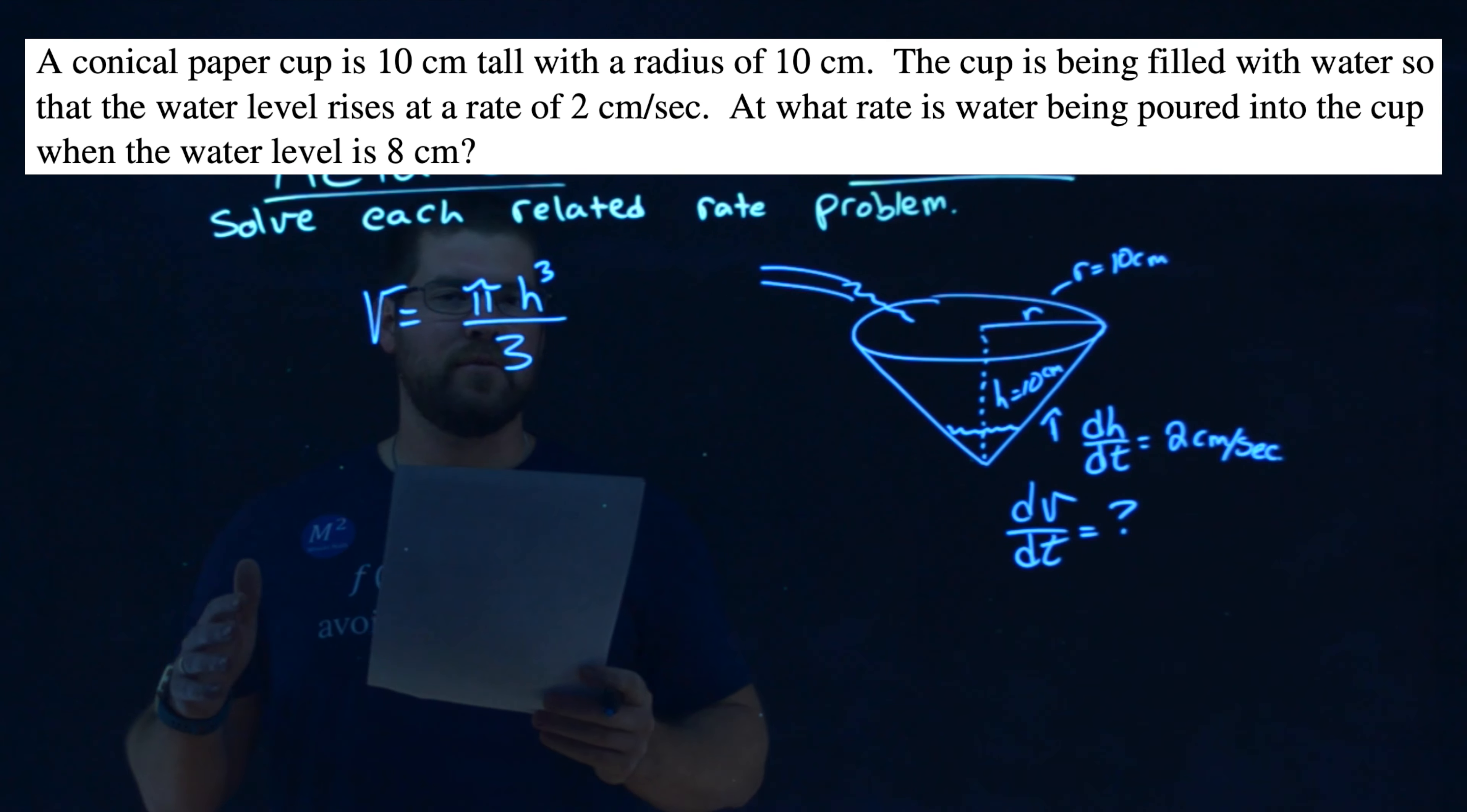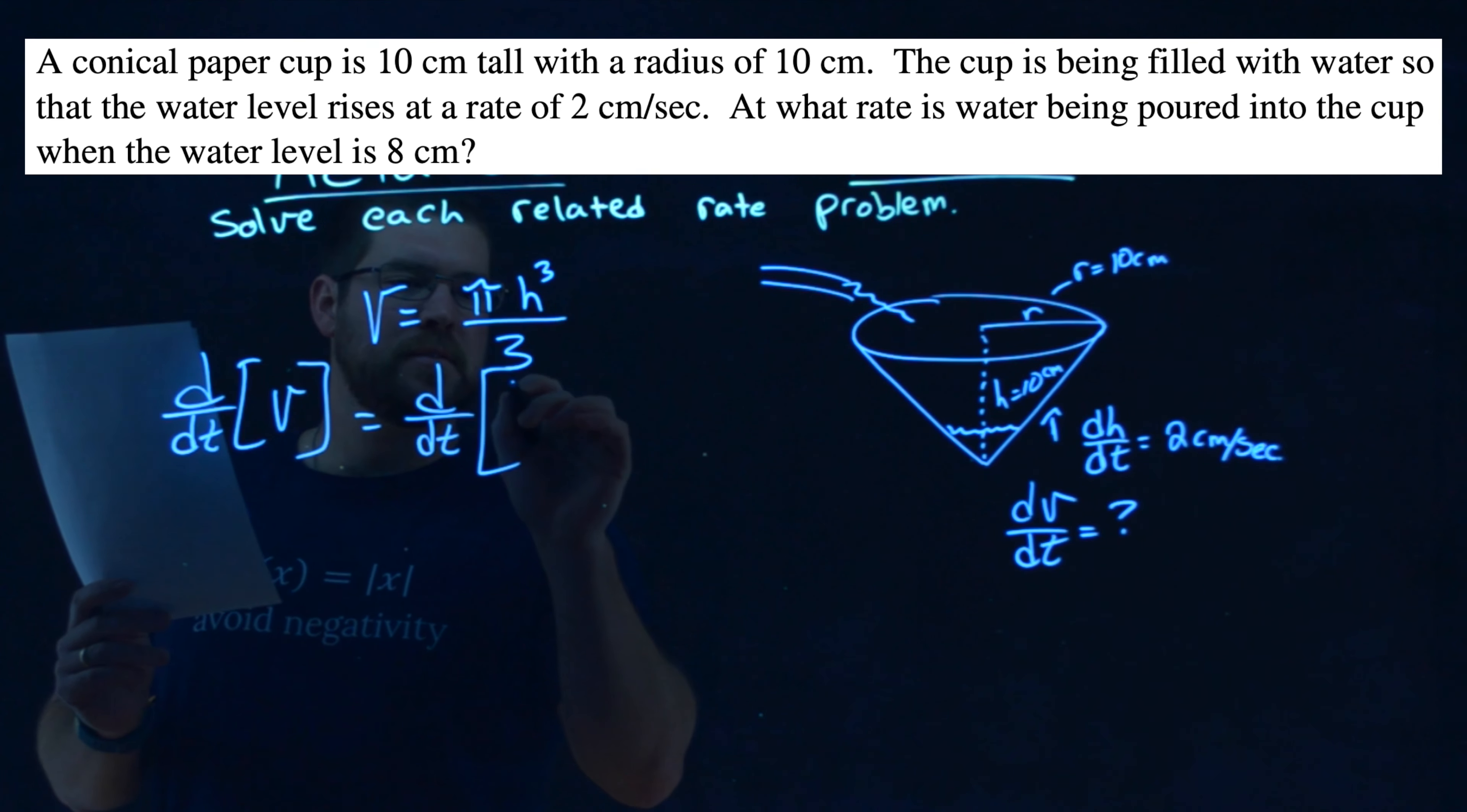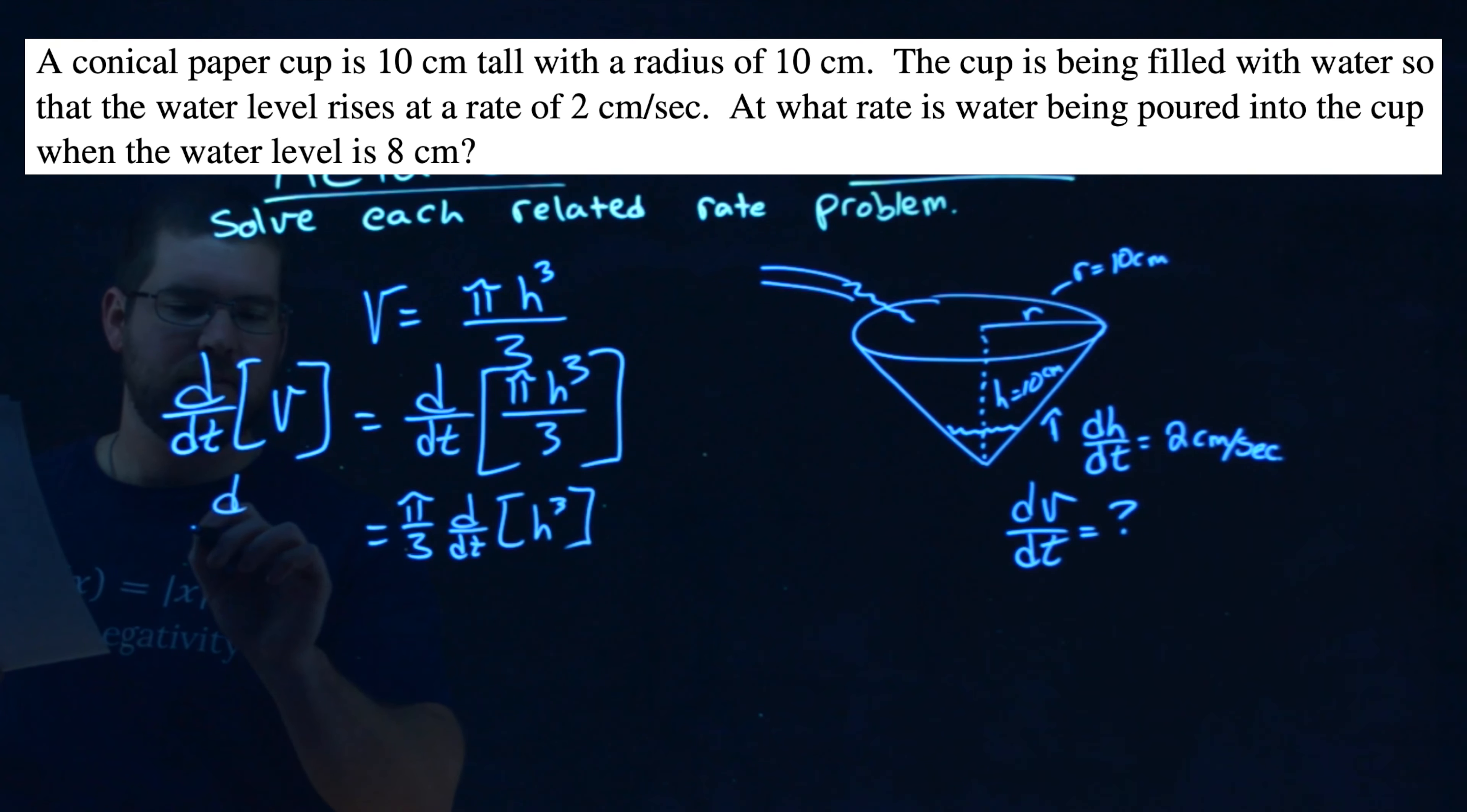All right. So let's take our formula and let's derive this with respect to time. So we take our d over dt of our volume. And it's equal to d over dt of the other side, which is pi h cubed over 3. Now, luckily for us, we can take the constant pi and 3 and kind of put it out front. So we have pi over 3 here, d over dt of just h to the third power. And we write this down here, d over dt of my volume.